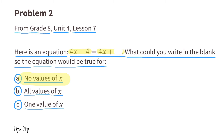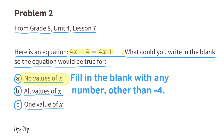Going back to part A: what could you write in the blank so the equation would be true for no values of x? Fill in the blank with any number other than negative 4 — for example, 5, 17, or 25 — and the equation would be true for no values of x.